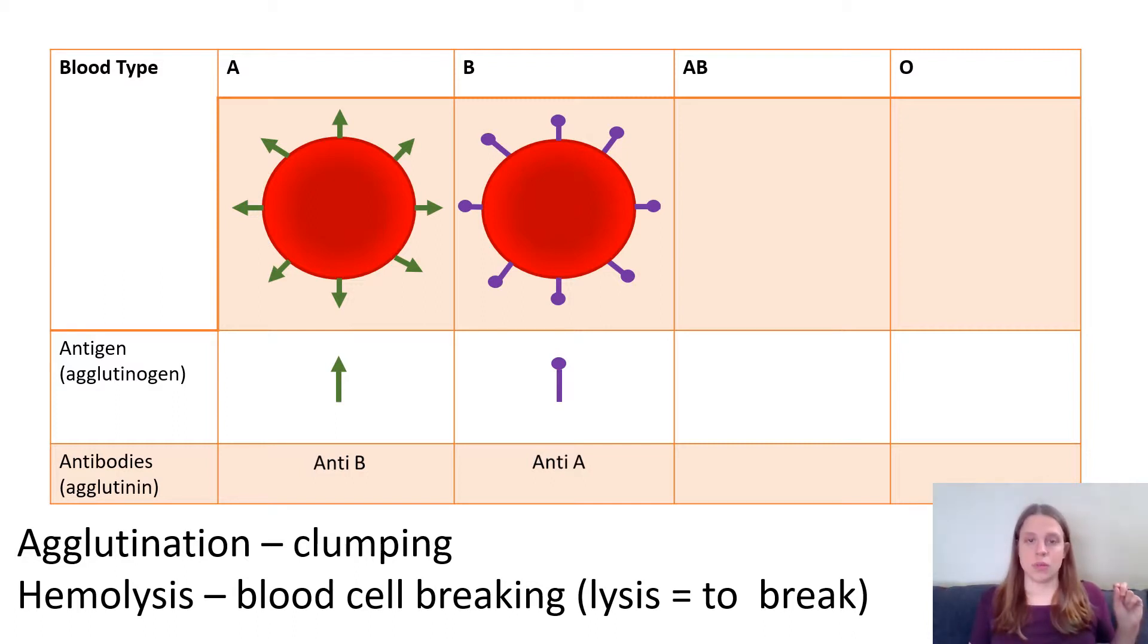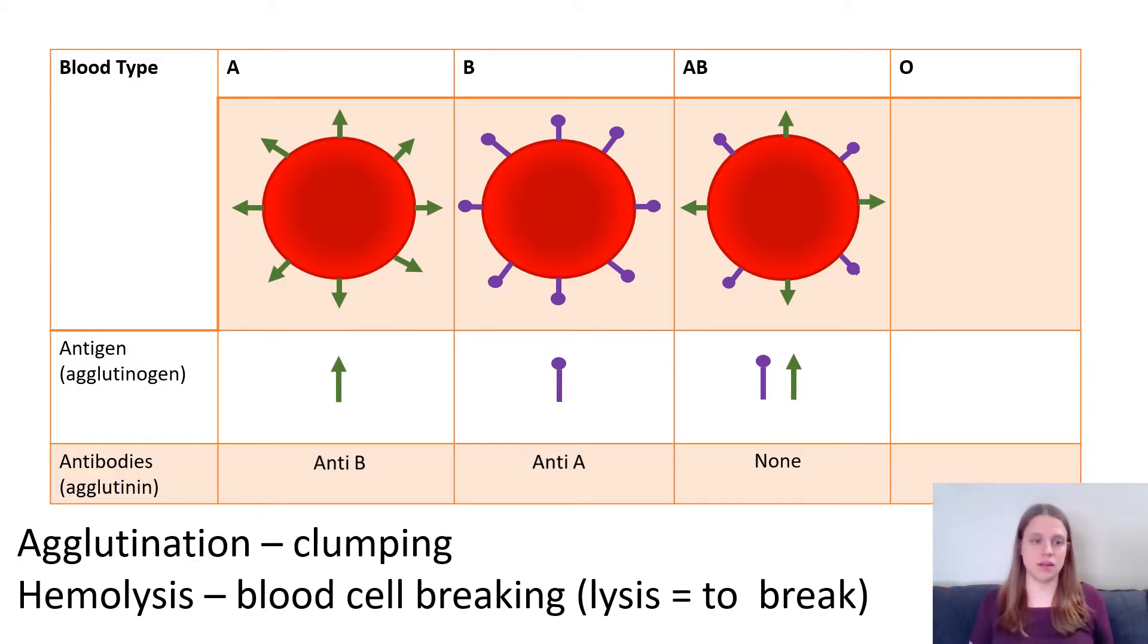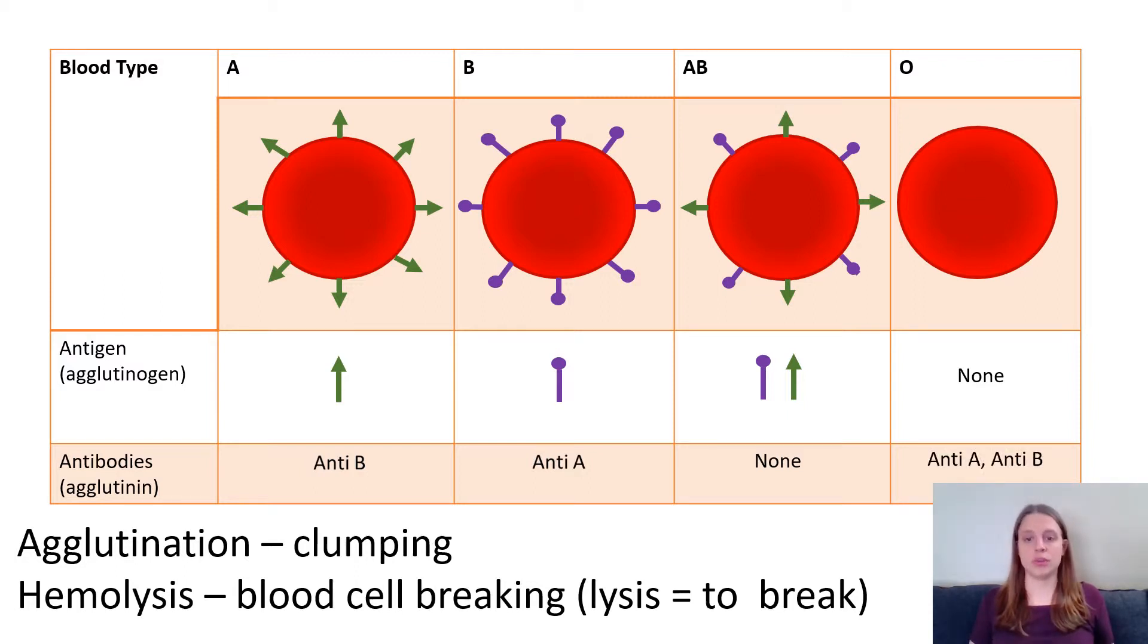So someone with AB blood with both A and B antigens will not produce any antibodies. They will recognize both B and A antigens as belonging to the self. Whereas someone with type O blood they have zero antigens on their blood cells. So they produce antibodies against both A and B antigens.